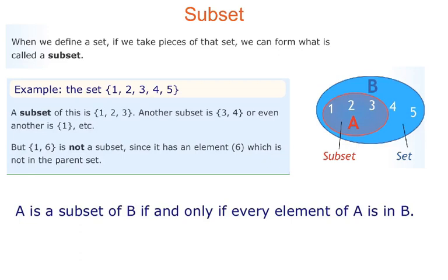The first one we're looking at is subset. We define a set, and if we take pieces of that set we can form what is called a subset. For example, the set {1, 2, 3, 4, 5} — a subset of this is {1, 2, 3}. Another subset could be {3, 4}, or even just {1}, and we could still find some more.